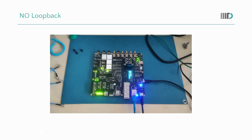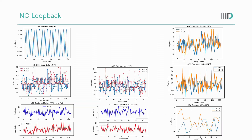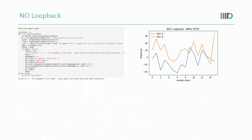In this no-loopback configuration, there is no connection between any DAC and any ADC. The plots show only noise, and MTS is not able to align this noise. The verification confirms MTS was not able to align the noise signals.